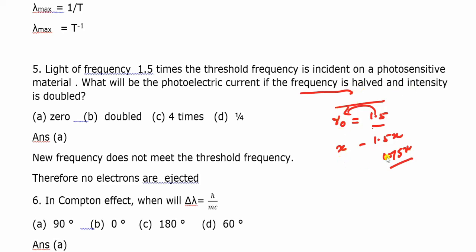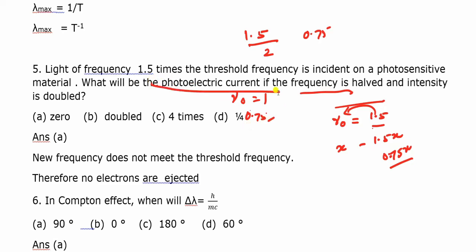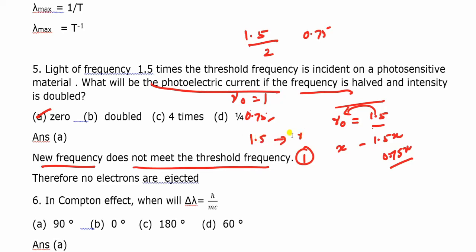When the intensity is doubled, the simple logic is: the new frequency of 0.75x does not meet the threshold frequency x. Since the new frequency is less than the threshold frequency, no electrons are ejected, therefore the photoelectric current is zero. The answer is A.